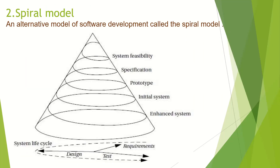The next model is the spiral model, which is an alternative model for software development. In the waterfall model the system is built only once, whereas in the spiral model several versions of the system will be built. The spiral model is more realistic than the waterfall model because multiple iterations add enough detail to complete a design. However, the spiral model may have too many spirals which may take too long when design time is a major requirement — this is the disadvantage of the spiral model.